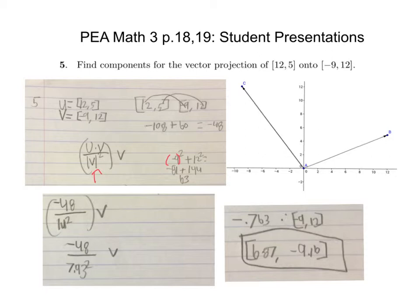When I thought about the magnitude of [-9, 12], that is a Pythagorean triple. So 9, 12, what's the third side got to be? 15. Therefore we should get 15 squared. And what's negative 48 divided by 15 squared? Negative 0.213 instead of the negative 0.763.